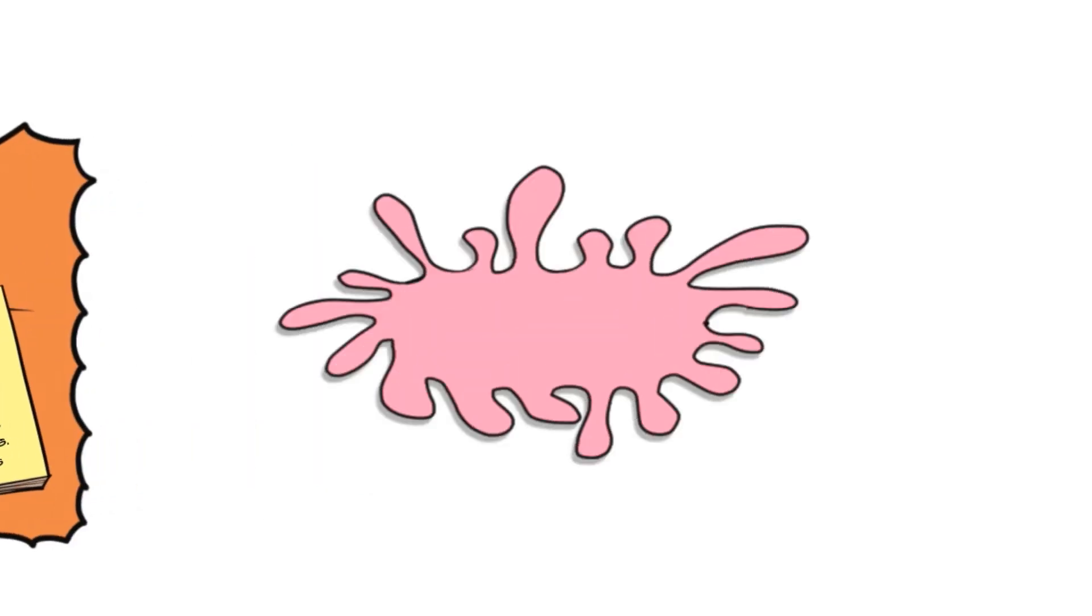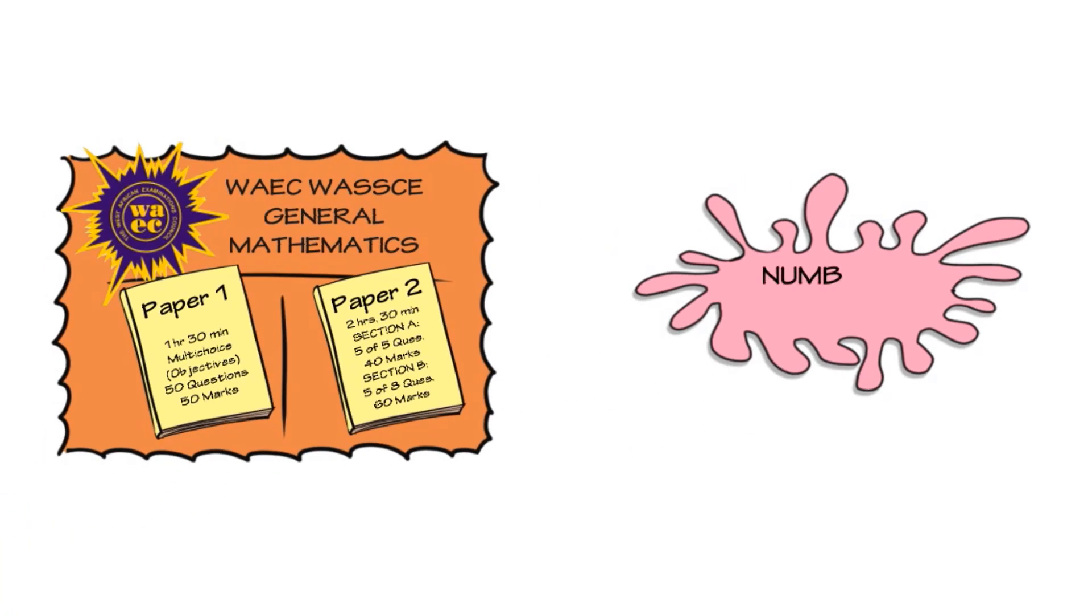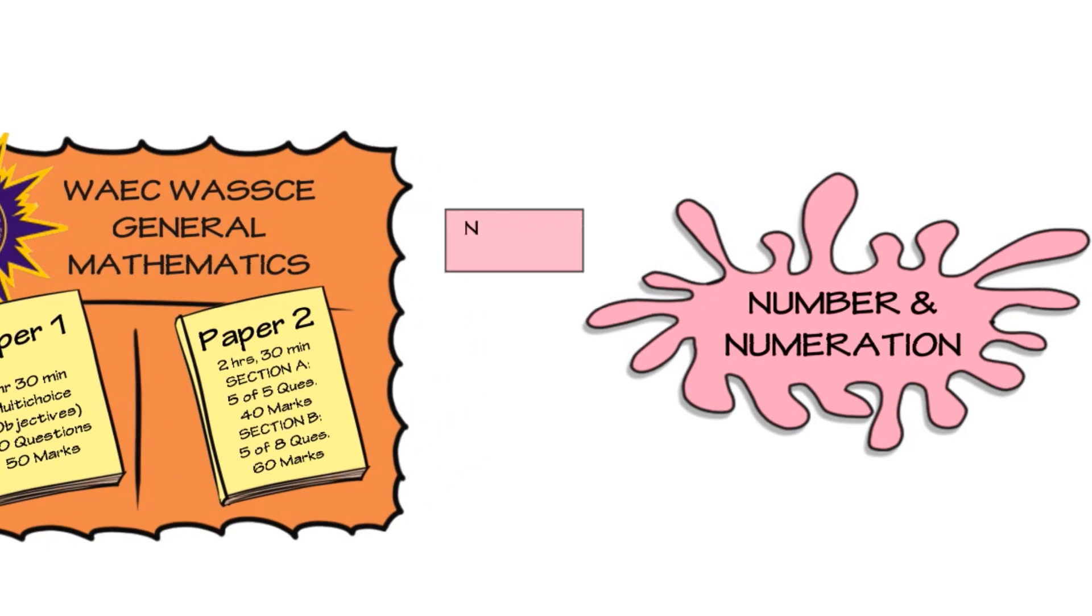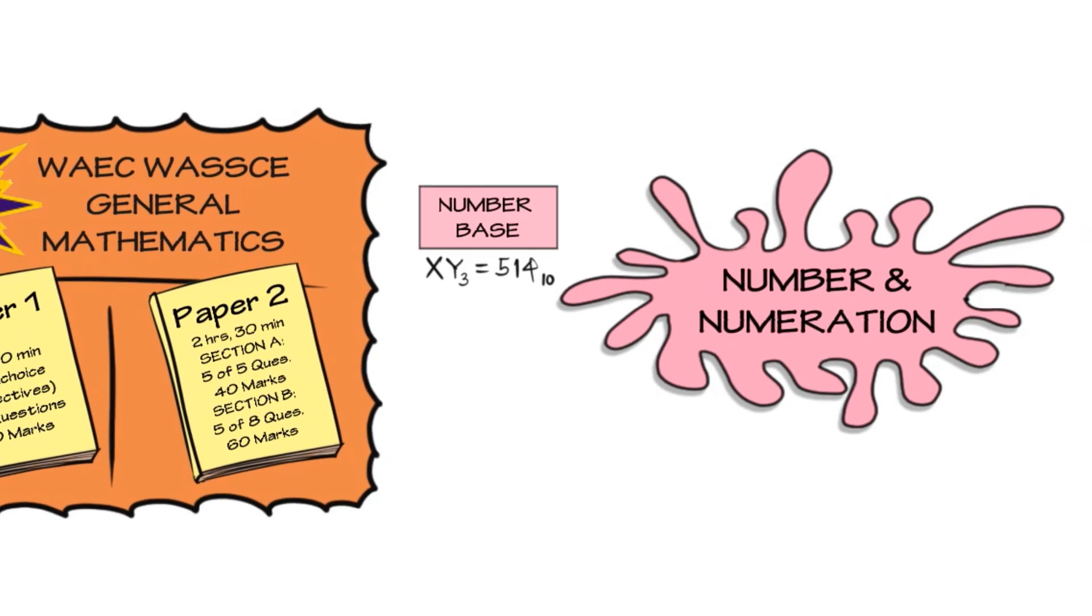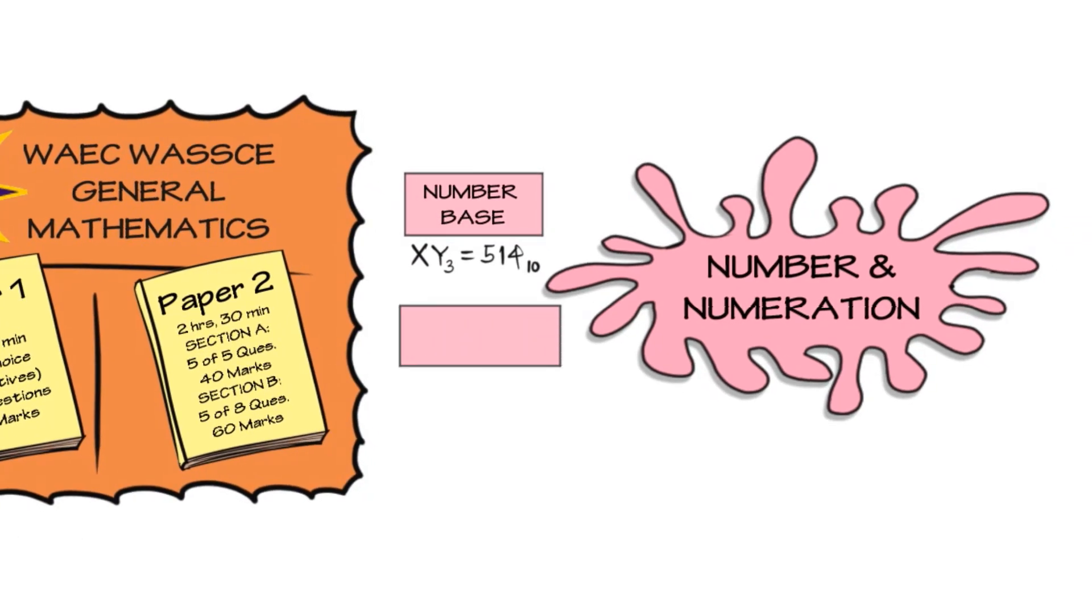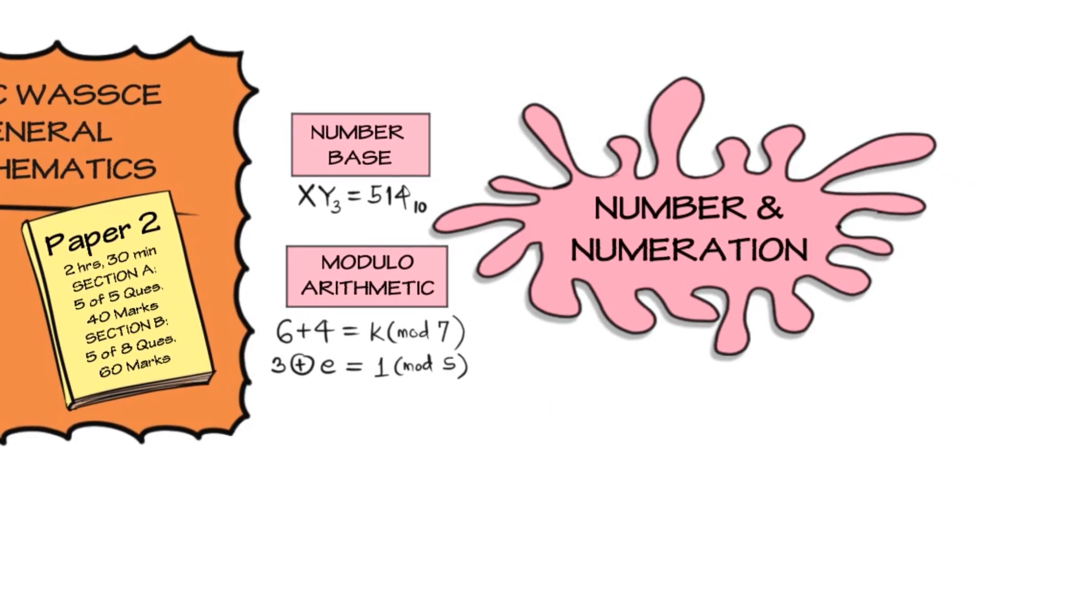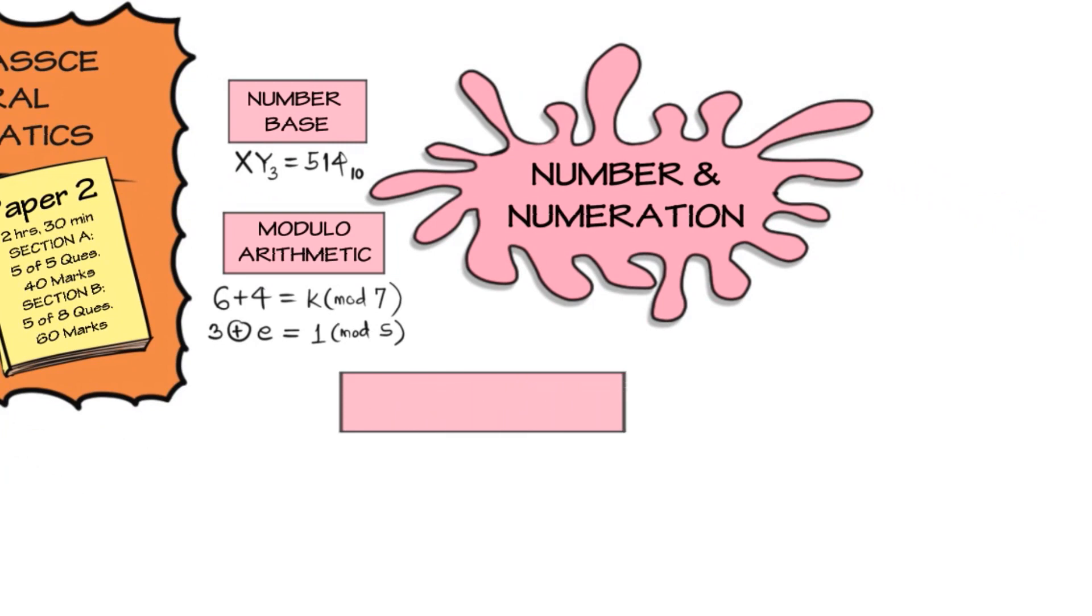The very first topic that WAEC is noting for us is the number and numeration. Here we are going to be talking about the number base in which you can convert from one base to another, say from base two or base three to base ten, and back to base two from base ten. We are going to be talking about modular arithmetic, and I think this is an aspect that so many students are not familiar with, but it's quite easy. We also have fractions, decimals, and approximations.